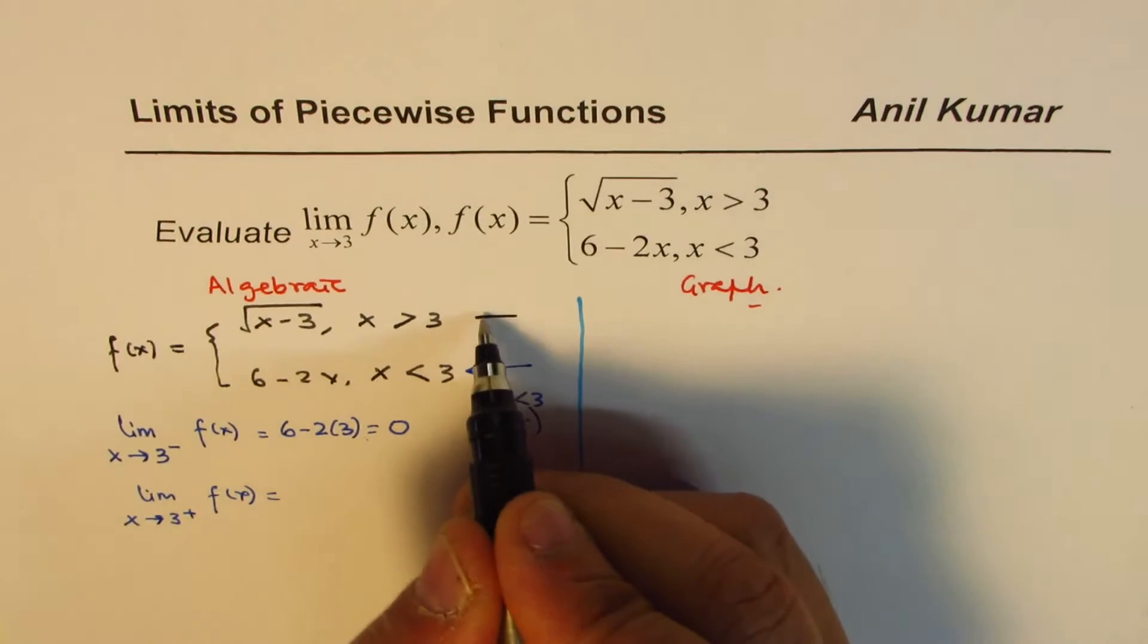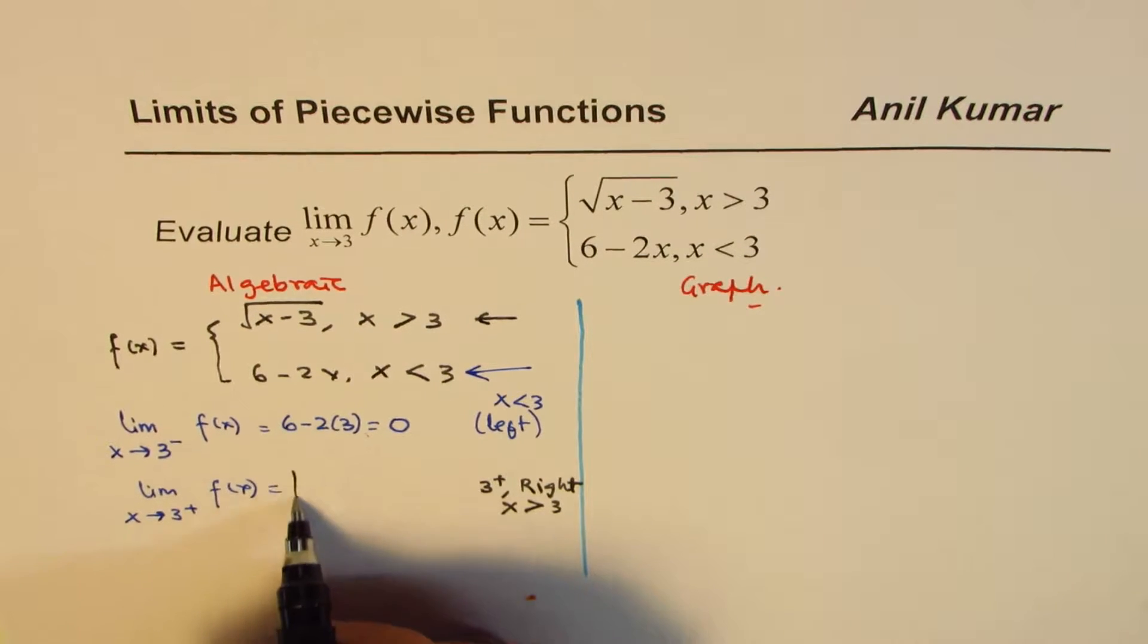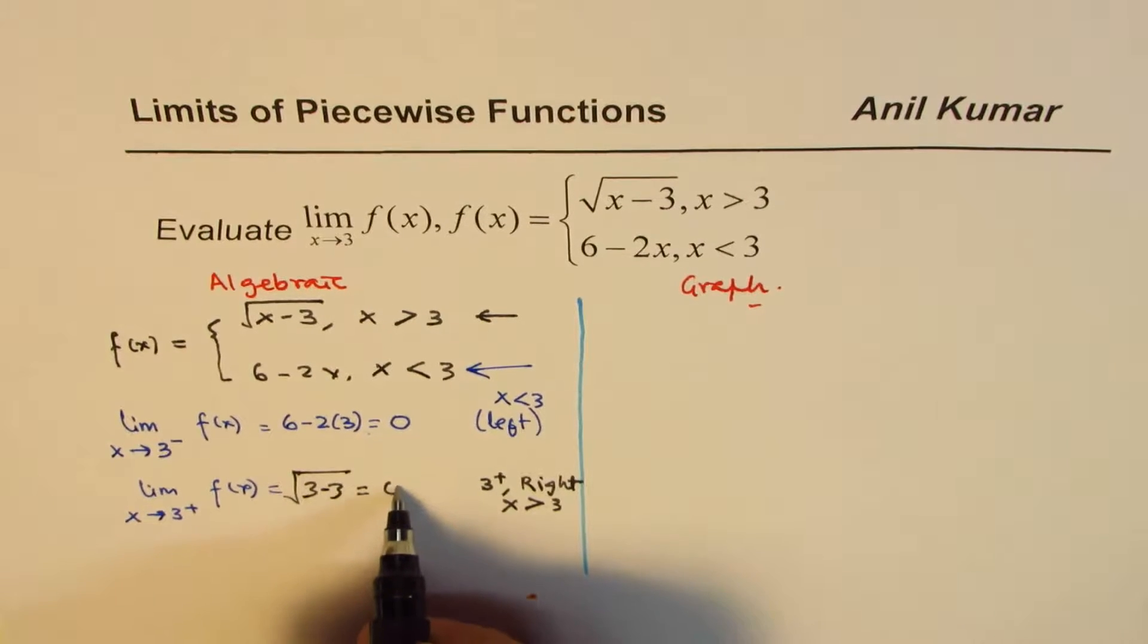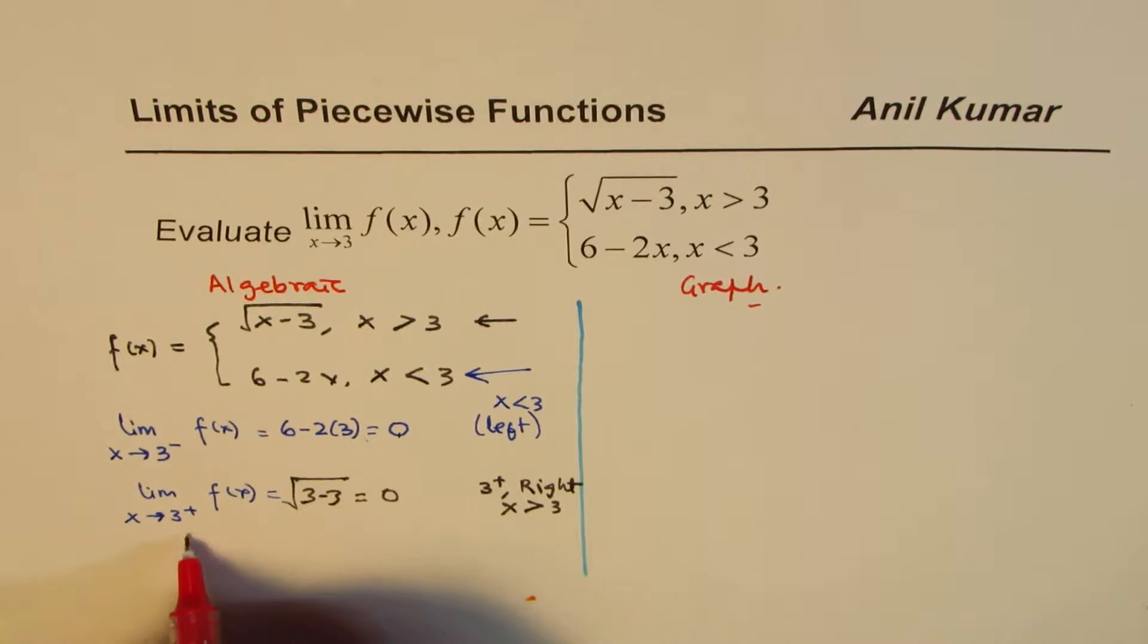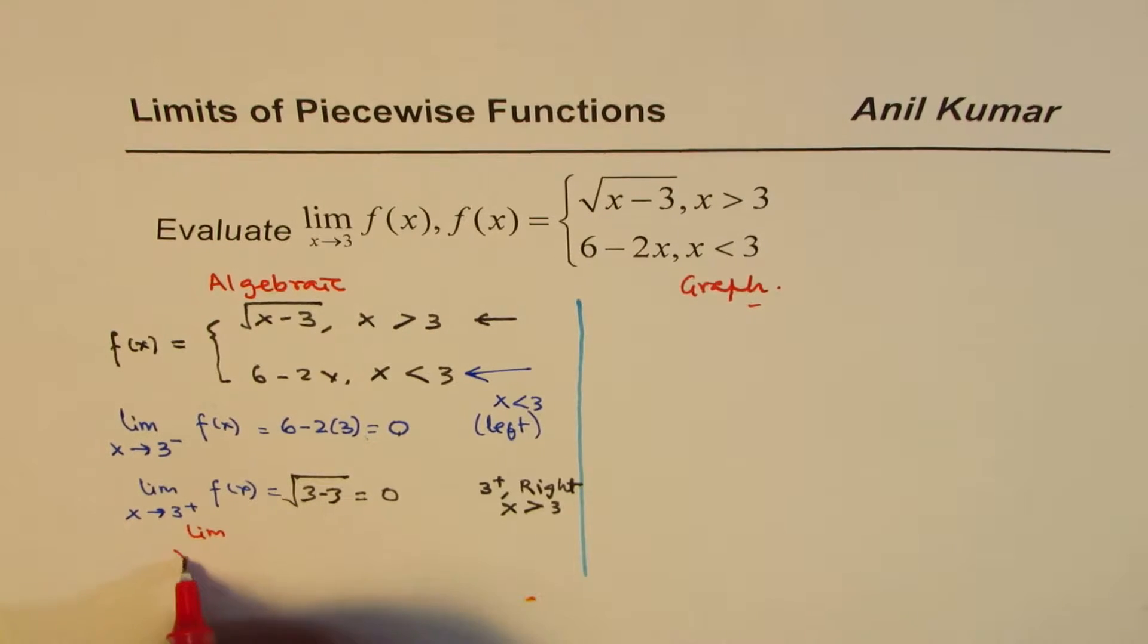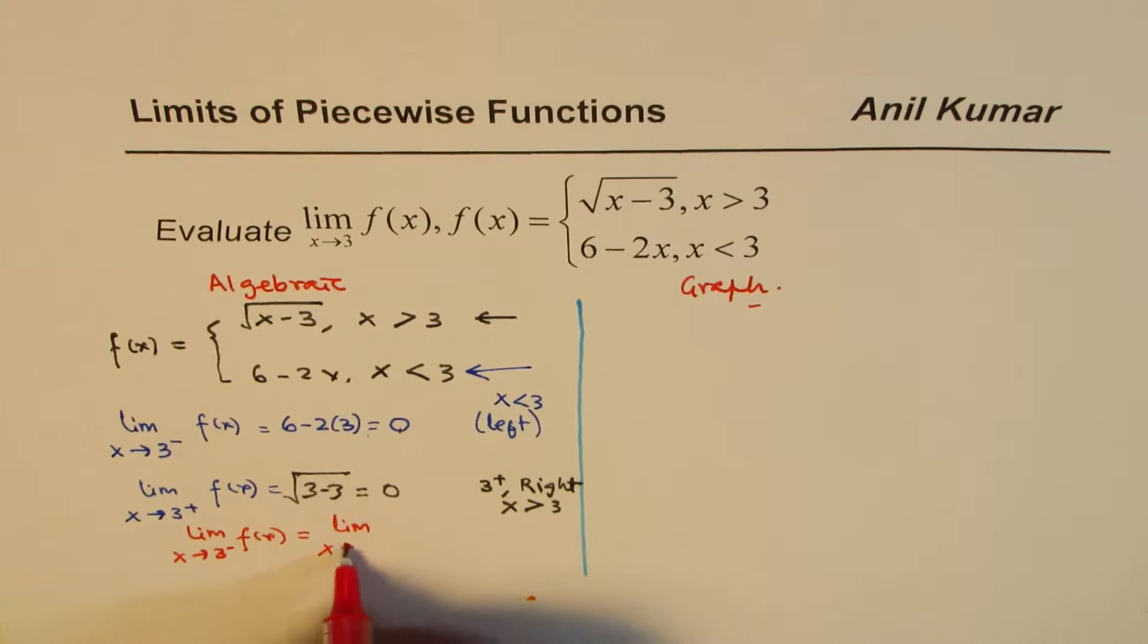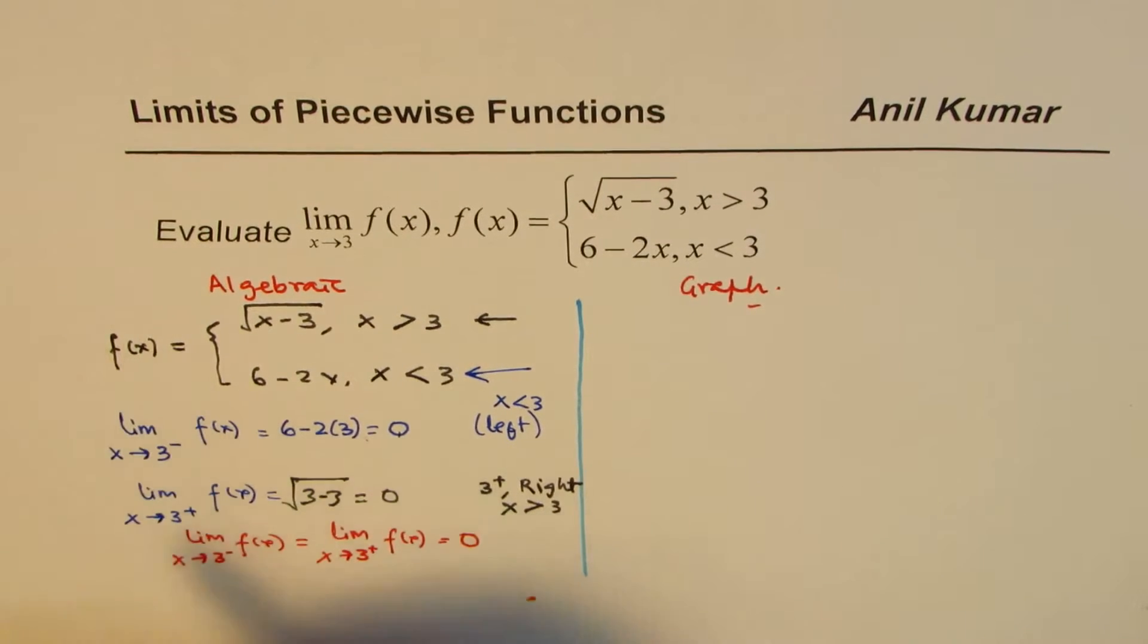Now, greater than 3 means we are looking into the first branch, which is square root one. So we have square root of 3 minus 3. You can always substitute. You can get 0. So what you notice here is that the limit as x approaches 3 from the negative side of this function is equal to the limit when x approaches 3 from the positive side of f of x. Both are 0. And therefore, the limit exists.